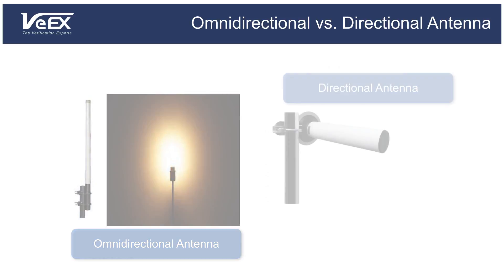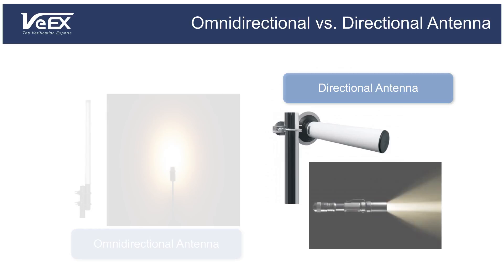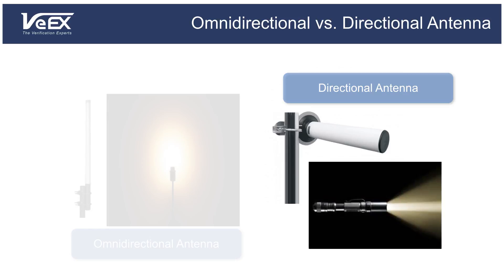A directional antenna, on the other hand, focuses more energy in a specific direction. This antenna is more like the light from a flashlight. It's often used for indoor or outdoor point-to-point connections, such as between buildings.